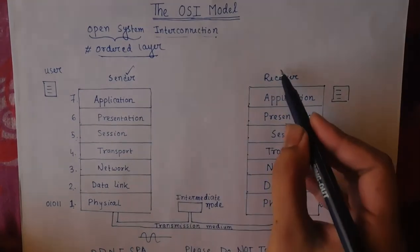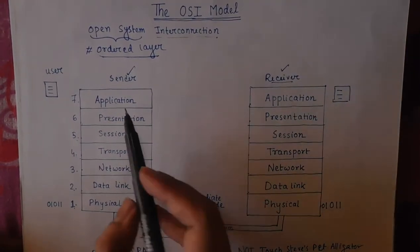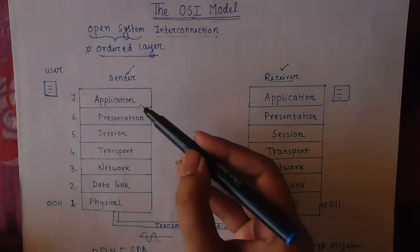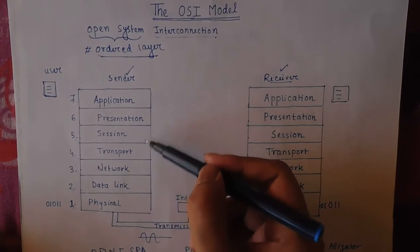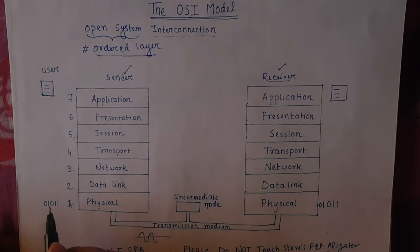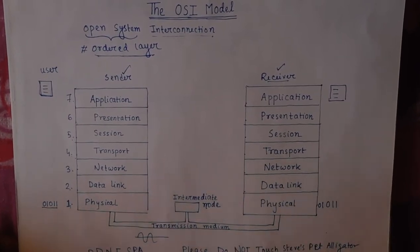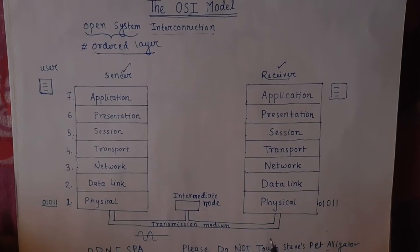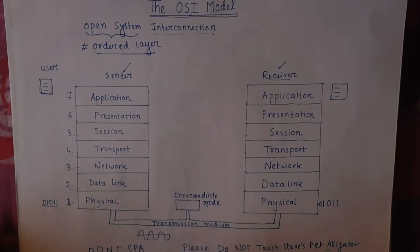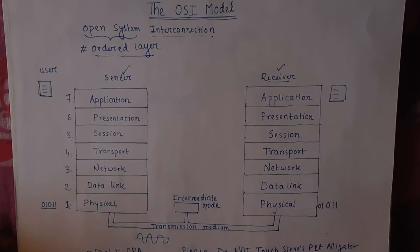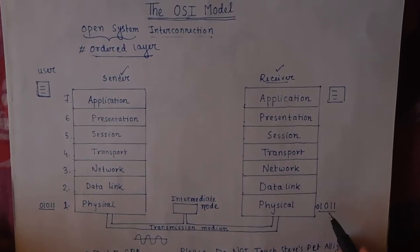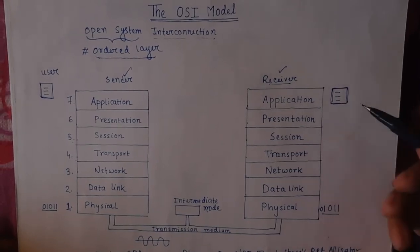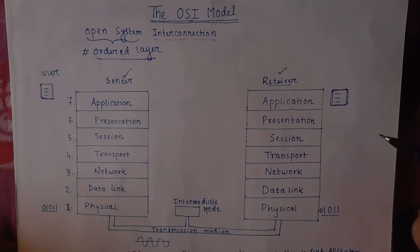Now we show the layers involved when a message is sent from one device to another. Suppose this is a sender and this is a receiver. In the application layer, when we type a message or mail, it passes down layer by layer. In the physical layer it is converted into a sequence of bits, then transmitted through a medium. At the receiver end, it converts back from bits up through the layers until the application layer delivers the actual message.